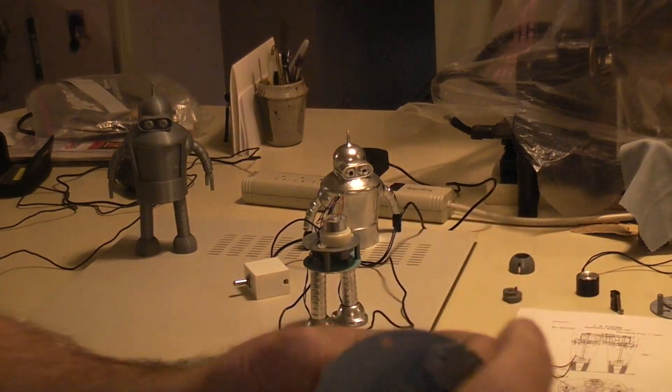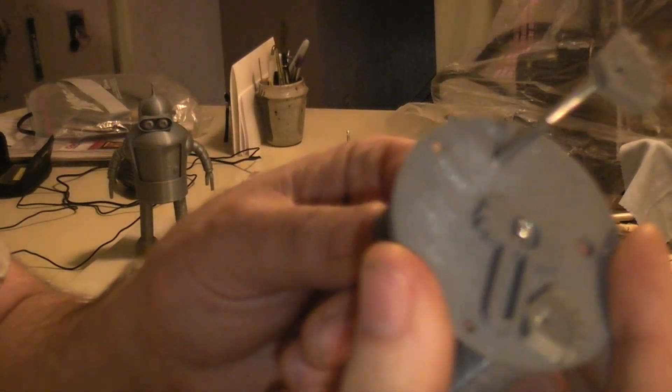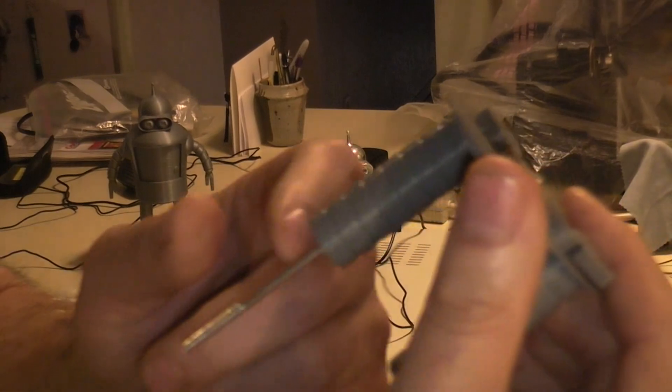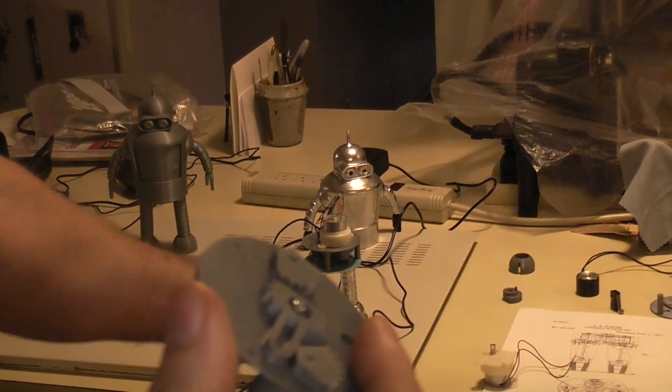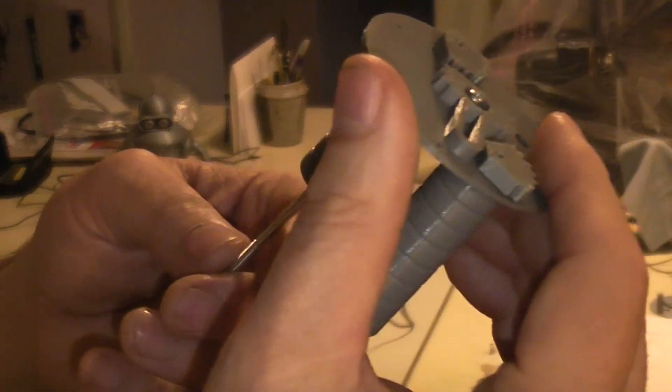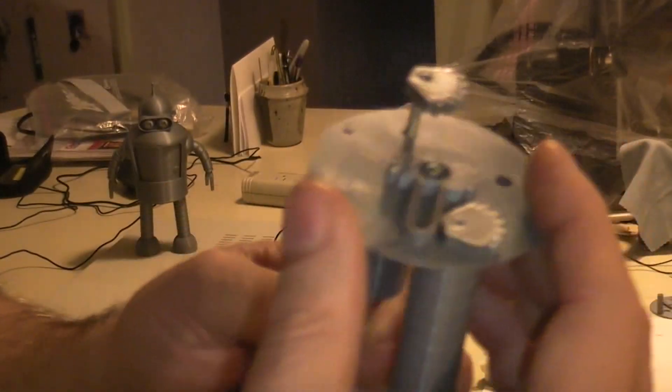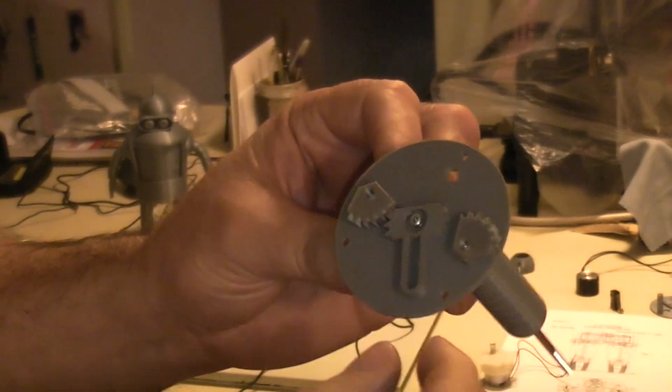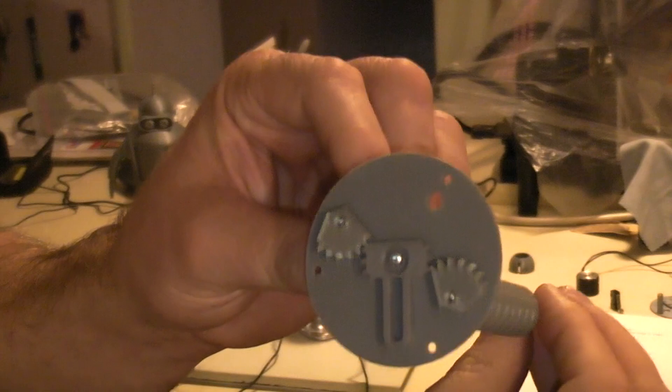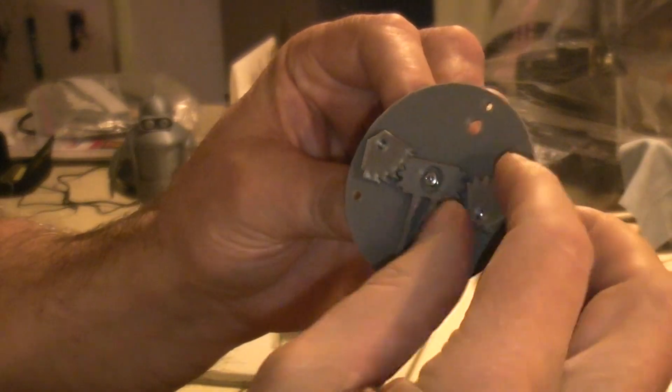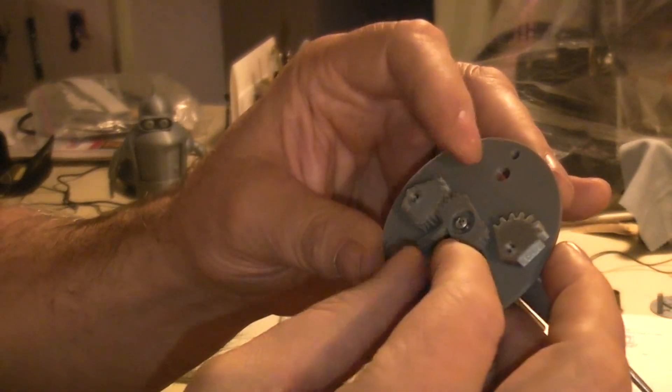Then that runs through this whole leg assembly, and at this end you would thread the magnet on the end of it. You could use a locking nut to lock it on there.